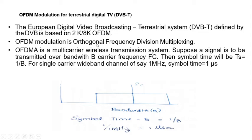OFDM stands for orthogonal frequency division multiplexing. In frequency division multiplexing, multiple users can share a channel at a time — they share a single link within the available bandwidth but with different non-overlapping sub-channels, and there may be guard bands. To this frequency division multiplexing we add the concept of orthogonal carriers, and that is what makes it OFDM modulation.